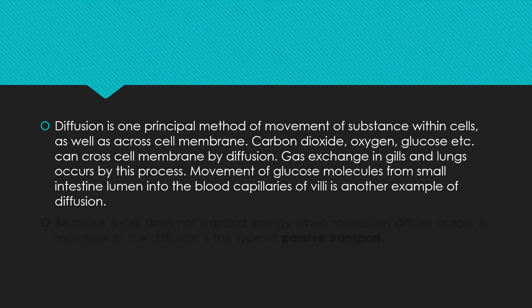The second place where diffusion is used: carbon dioxide, oxygen, glucose, etc. can cross cell membranes by diffusion. The third place where diffusion is used is gas exchange in gills and lungs, which occurs by the process of diffusion.